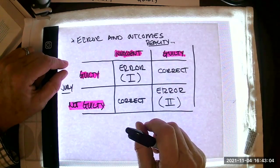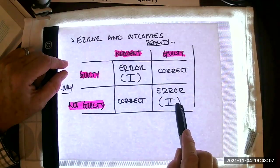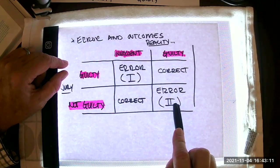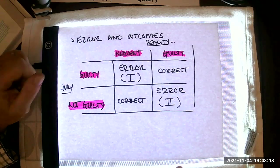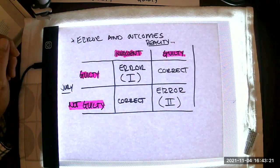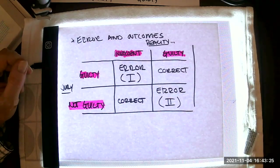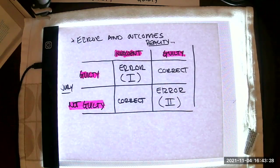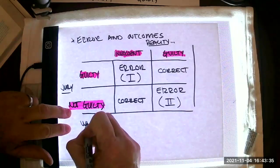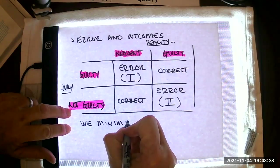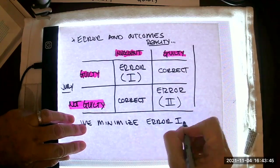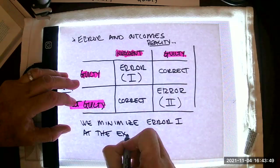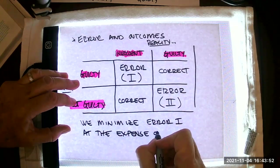The less you have of one, the more you have of the other and vice versa. For example, if you did not want any innocent person to ever spend any time in jail, we could do that. We'll just make sure we come back with a not guilty verdict in every single case, but then a bunch of guilty people go free. Maybe we want to punish the guilty. Well, every time we get a case, we come back with guilty. And the guilty has not gone free, but a lot of innocent people are also in jail. So it's a balance. We minimize error one at the expense of error two.